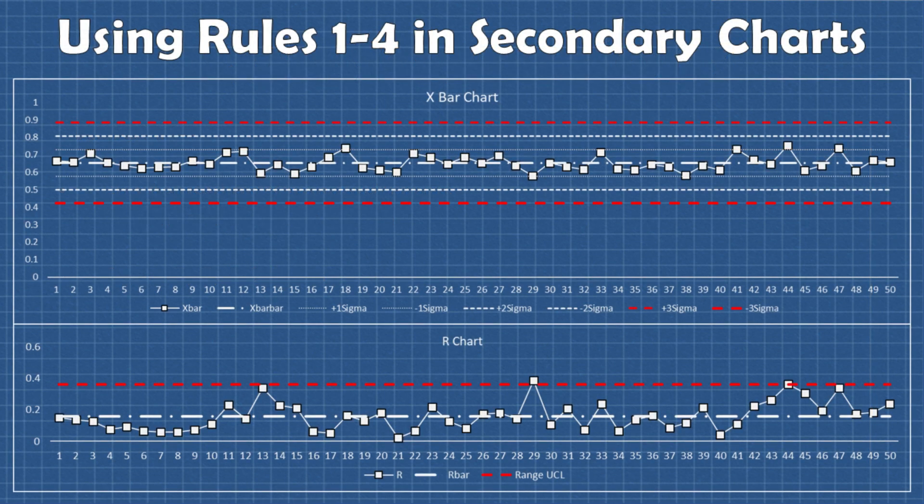Let's look at an example where this might be useful. Say we have a machine cutting a shaft to length. Here's an X bar and R chart of that data. The X bar chart shows no signs of a signal but we can see that rule two is being violated on the range chart. That means we can be pretty confident that there has been a small shift in the short term consistency of the process.